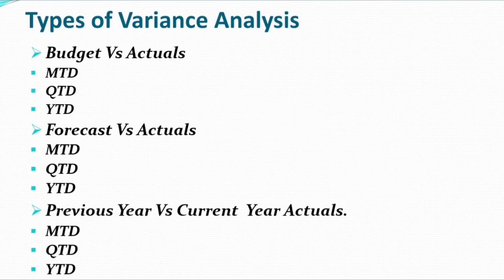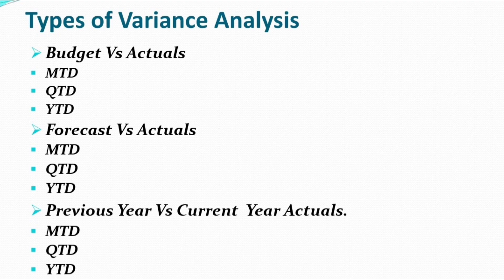Before moving directly to P&L analysis, let me walk through the types of variance analysis we prepare: budget versus actuals, forecast versus actuals, and previous year versus current year actuals. Budget means the numbers we close at the start of the year — projected revenue, cost, and overall P&L. Forecast is a rolling forecast updated every month or quarter using the latest scenarios. We do variance analysis on the basis of MTD, QTD, and YTD — month to date, quarter to date, year to date. Refer to my FP&A basics video for more on these terms.